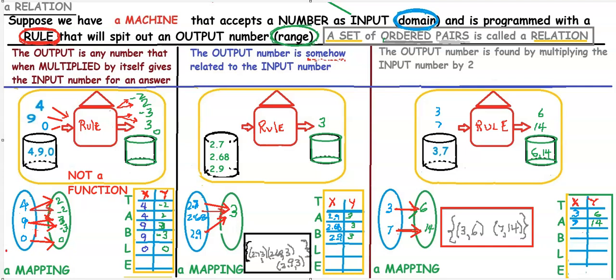The third one on the far right, the rule in the machine is going to multiply the input by 2. So if you put a 3 in, out comes a 6. If you put a 7 in, out comes a 14. We get a nice set of ordered pairs: 3, 6, 7, 14.